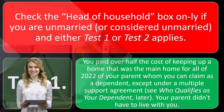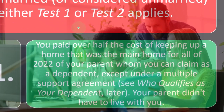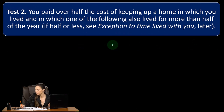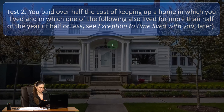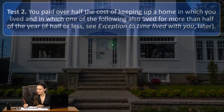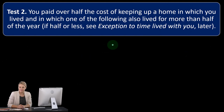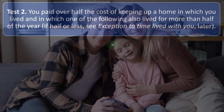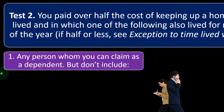Test 2: you paid over half the cost of keeping up a home in which you lived, and in which one of the following also lived for more than half of the year — if half or less, see the exception to time lived with you. When reviewing these tests, notice it's an OR condition — either Test 1 or Test 2 must be met. Test 1 relates to a parent as a dependent; Test 2 relates to a child or other qualifying person. The split custody issue often creates confusion around whether the child lived with you for more than half the year, which affects the ability to claim head of household over single.